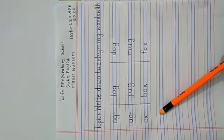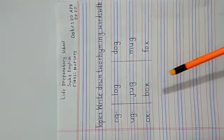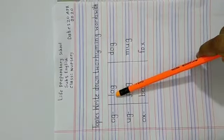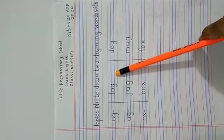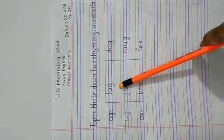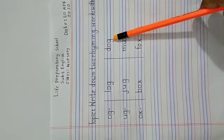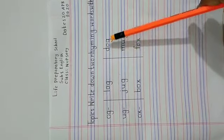Now everyone follow how O-G make word. We will write L before O-G, then make a word, L-O-G, log. After this write D before O-G, and make another word, D-O-G, dog.